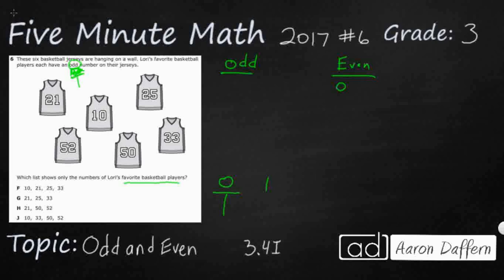If I were to try 1 and divide that into equal groups, I can only put 1 on one side — they're unequal, therefore it's an odd number. If I were to try 2, I could put 1 on each side. So I've got two groups of 1, therefore 2 is an even number.